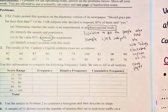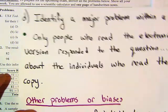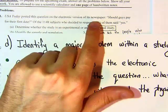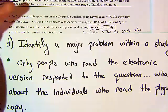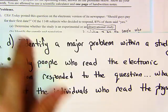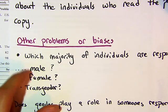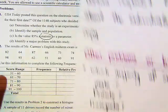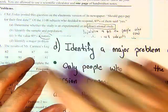For Part D, identify a major problem with this study. One issue is that only people who read the electronic version responded — it doesn't include people who read the physical newspaper, so it may not provide enough data for a well-rounded answer. Additionally, there are biases around gender: are the majority of respondents male or female? Gender identity may influence someone's response to 'should guys pay for the first date?'